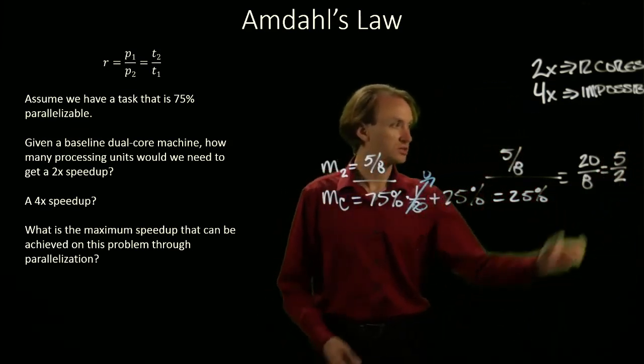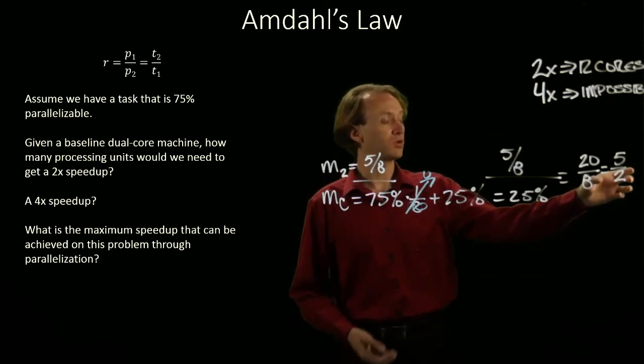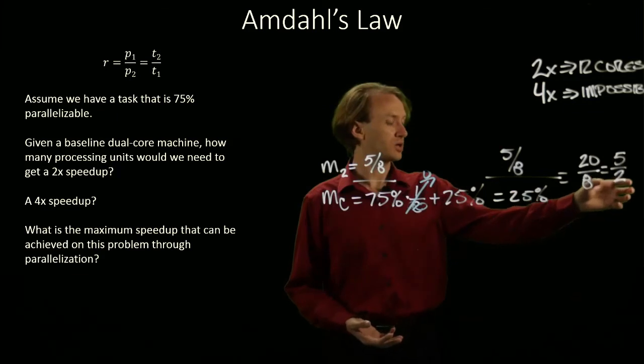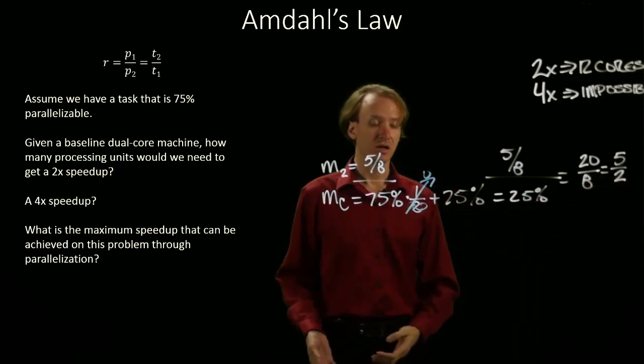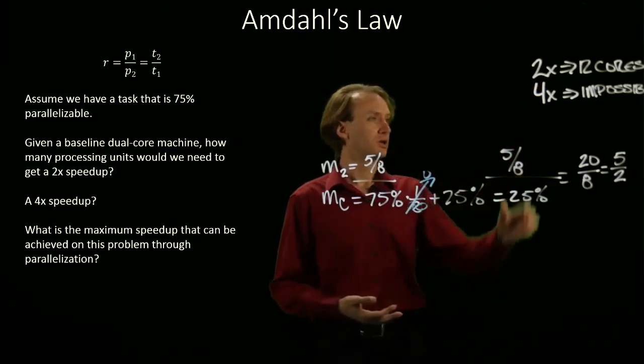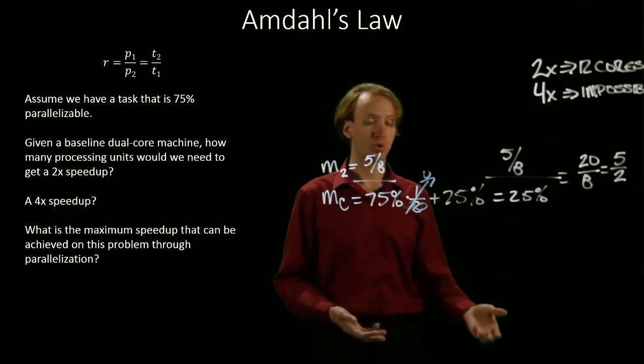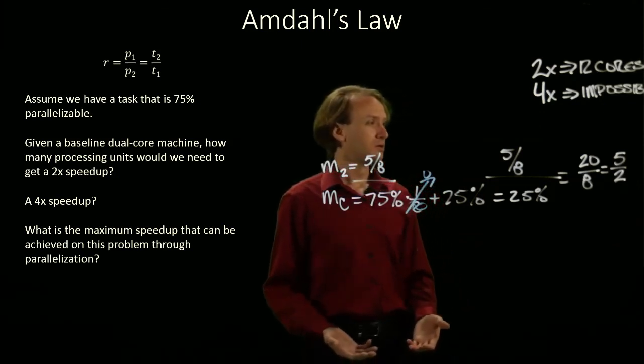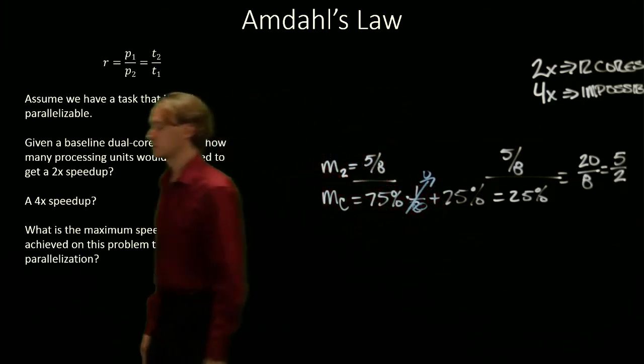So, this is the most amount of speedup I can get relative to that dual core machine that I started with. It's running two and a half times faster than the original machine, which is more than two times, which we saw we could do, but not four times, which we saw we couldn't do. Good enough.